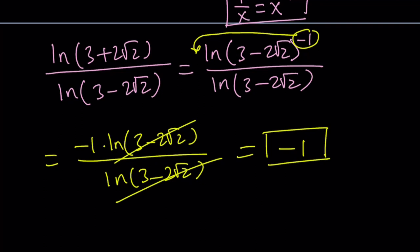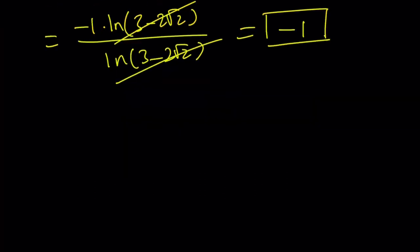Let's go ahead and look at some of the properties that we used. For example, we used a property that looks like this. If you have ln a to the power x, then you can write it as x times ln a.